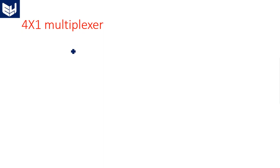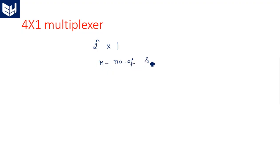A multiplexer is used to convert parallel data into serial data. Generally a multiplexer has 2 power n inputs and one output, where n represents the number of selection lines. This is the general representation: 2^n by 1, meaning 2^n inputs and one output.